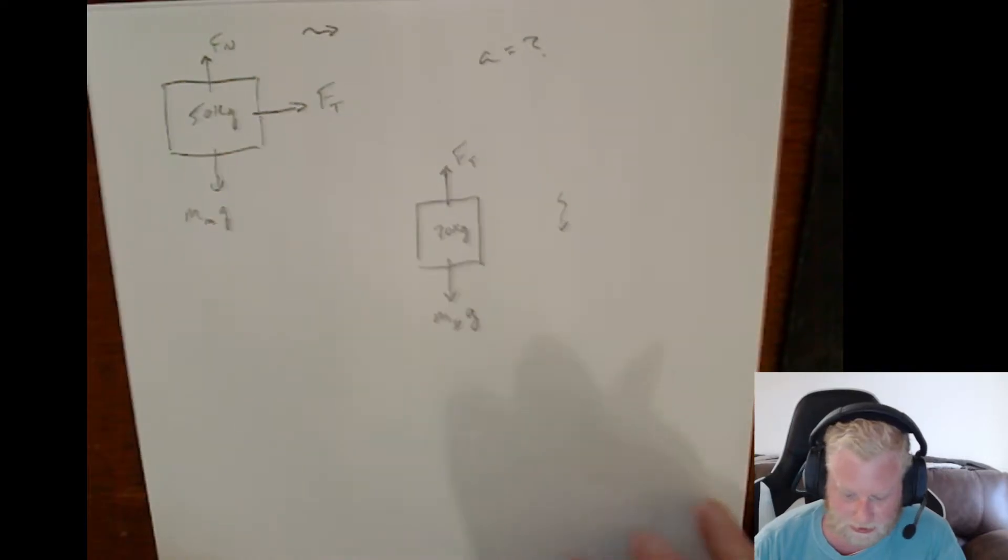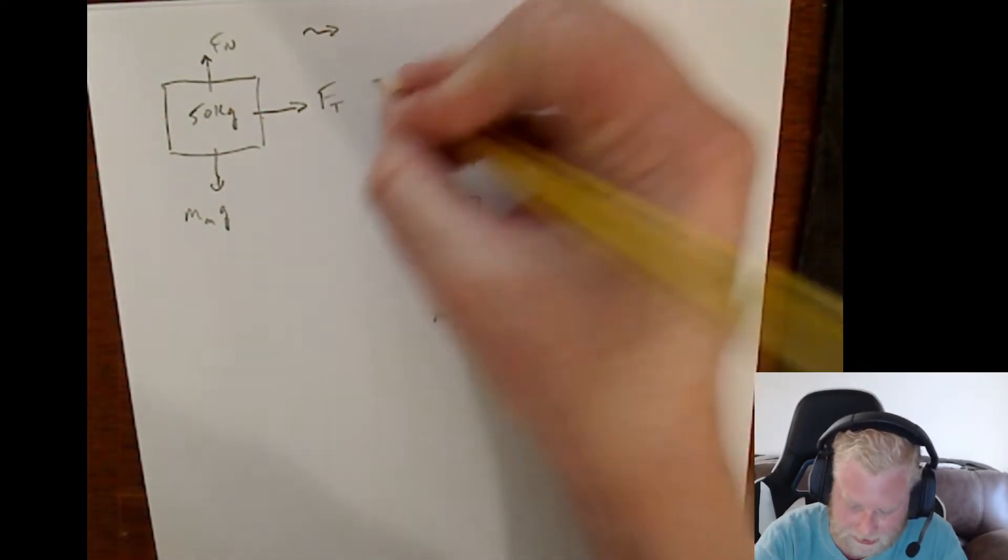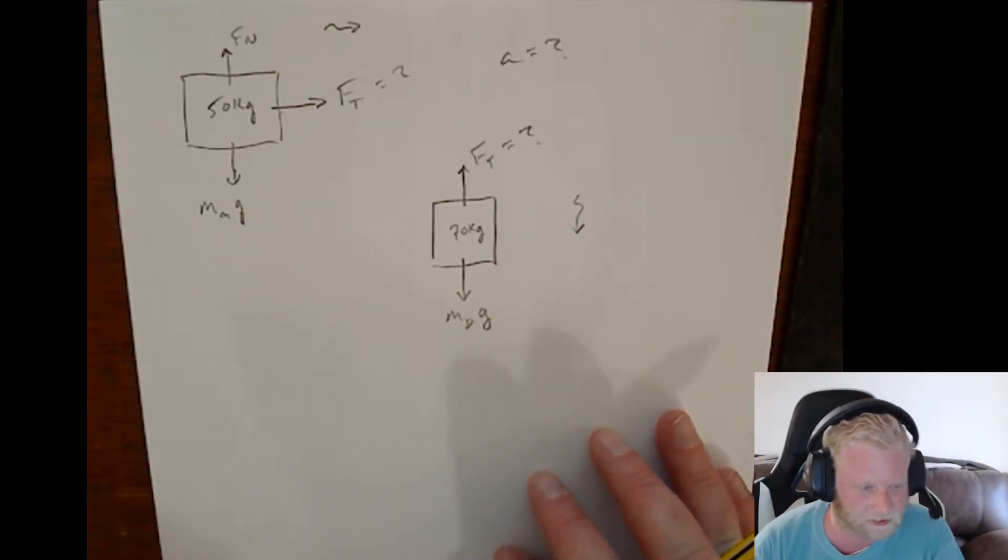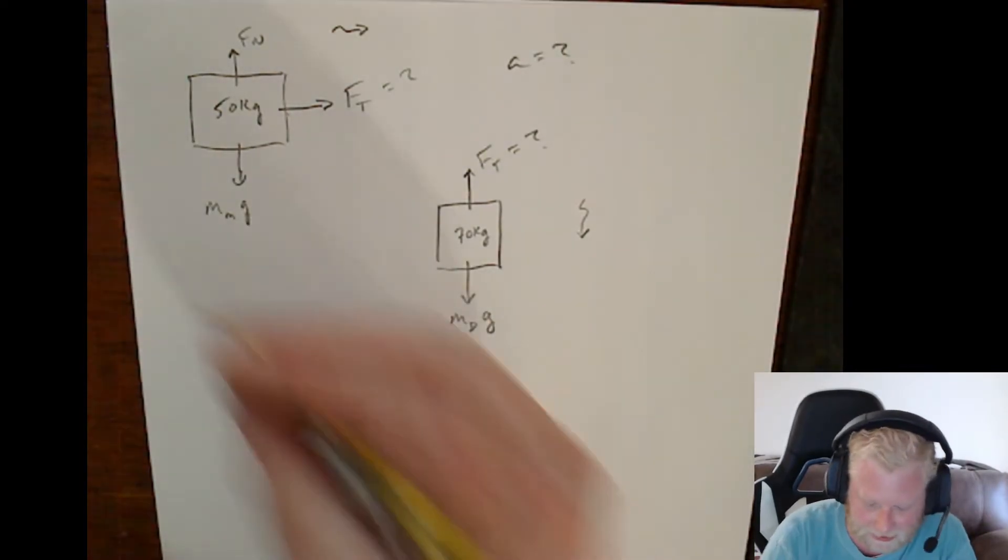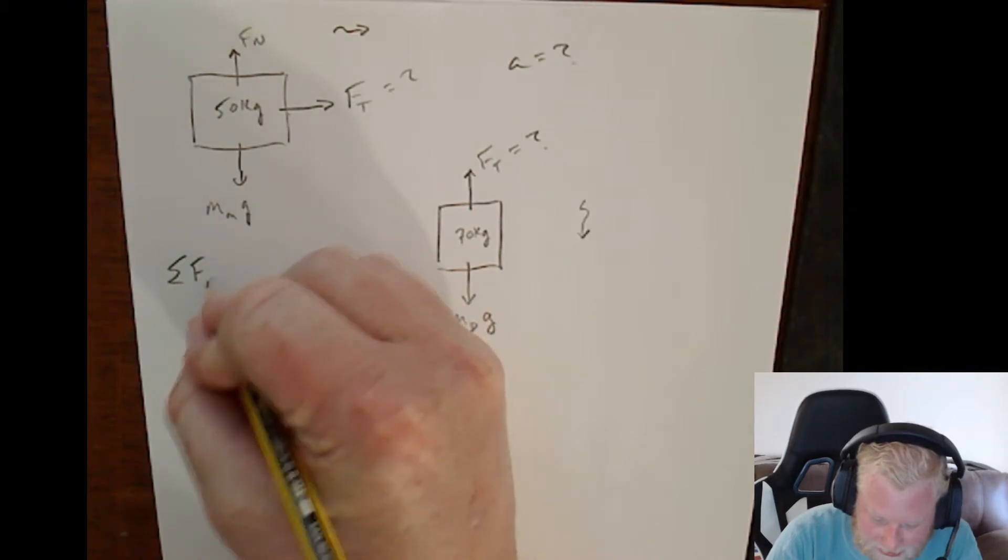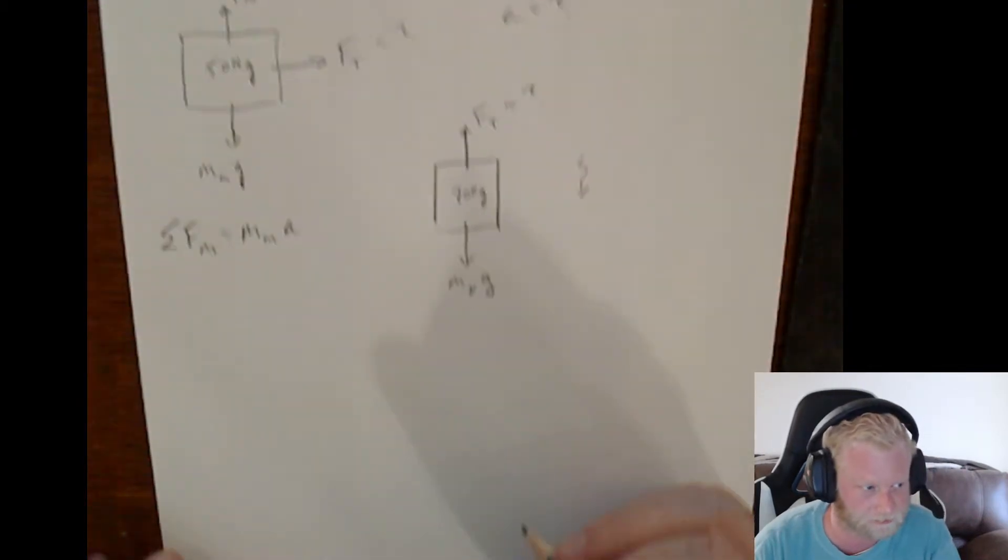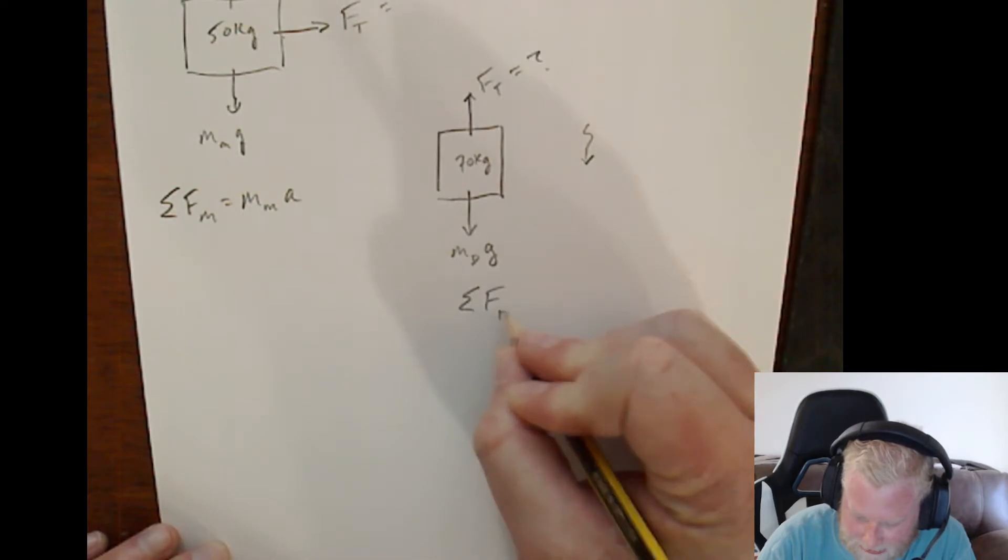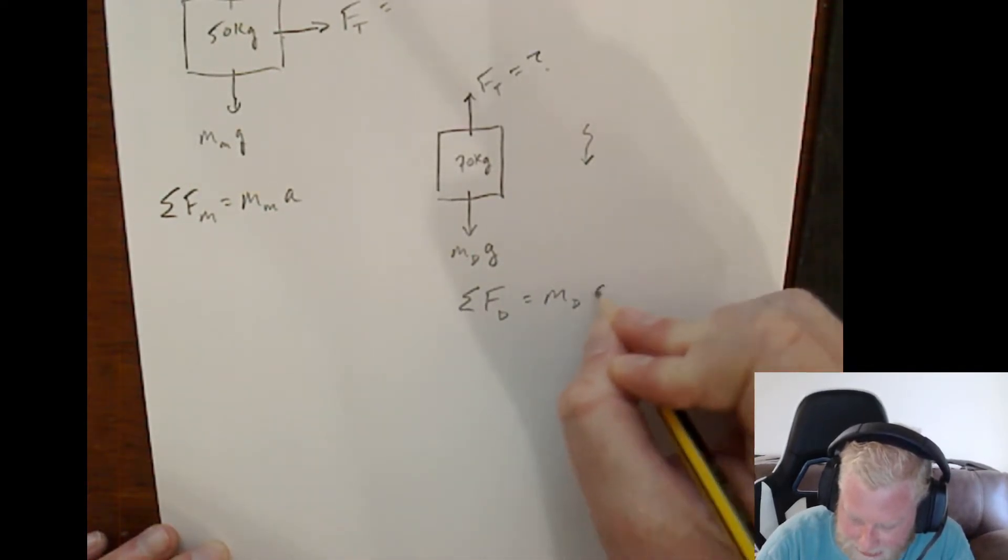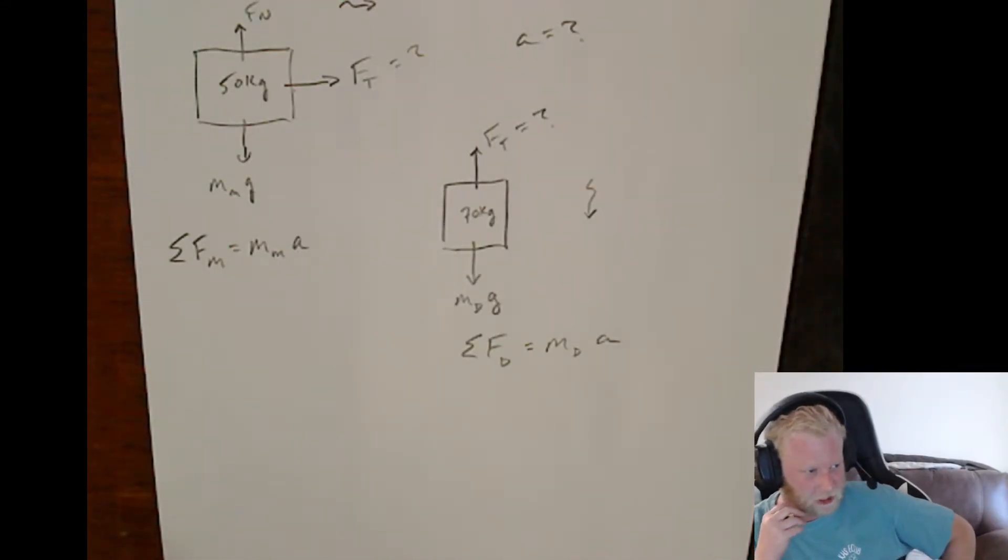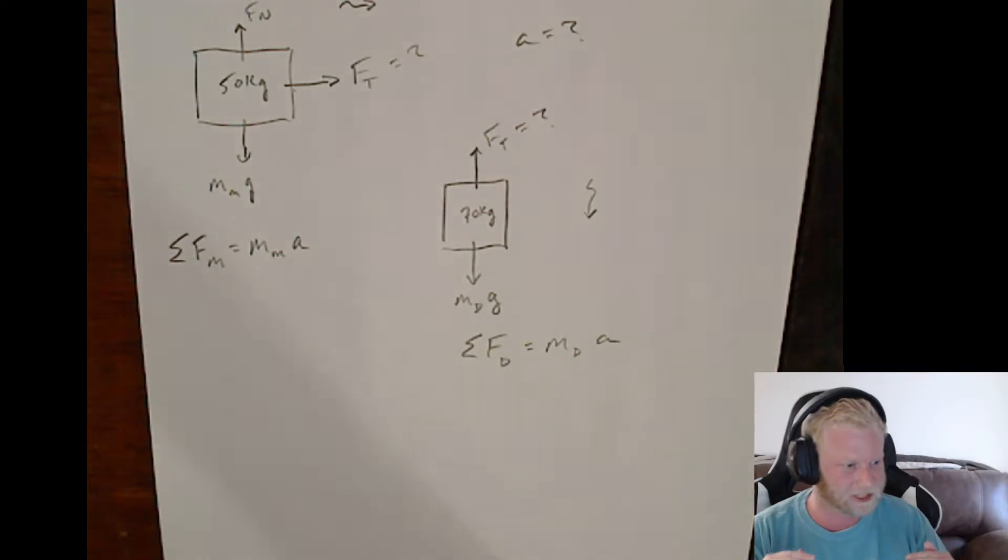Now, if we want to figure out our tension forces and our acceleration, a good place to always start with these problems is let's set up a net force equation for each one of these. Net force acting on Mary is equal to Mary's mass times her acceleration. And the net force acting on Don is equal to Don's mass times acceleration. Always start with just a basic statement of Newton's second law for each object.